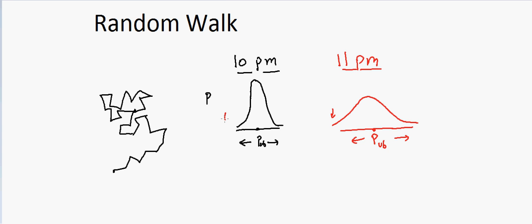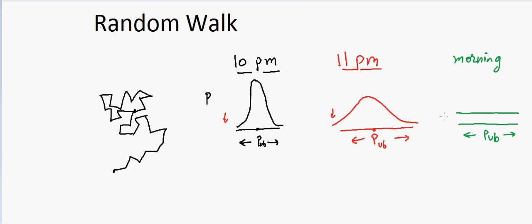The probability at longer distances is now higher, and the probability of being at the pub is less. If the wife waits until morning to go to the police, the husband could be anywhere. The distribution becomes essentially a flat line — the probability of him being at the pub is just as likely as him being somewhere far away. This is the core concept of random walk.